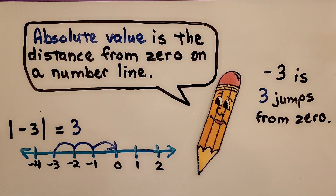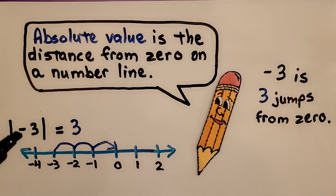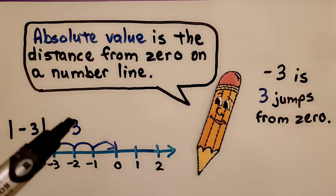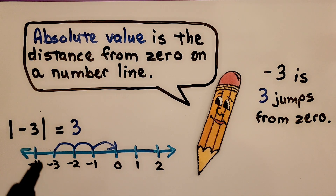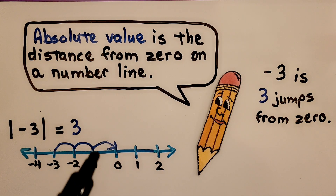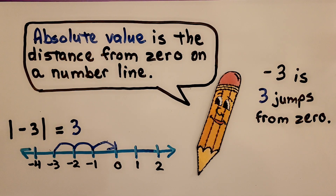We learned last year in sixth grade about absolute value — it's the distance from zero on a number line. The absolute value of negative 3 is 3, because negative 3 is 3 jumps from zero, so its absolute value is 3.